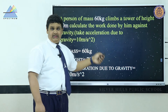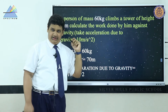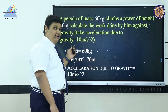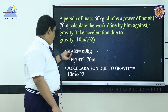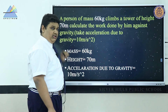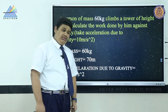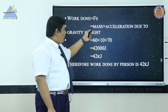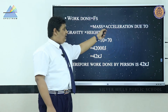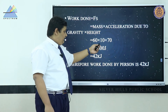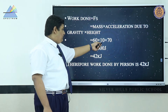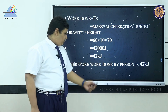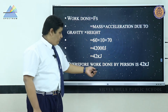Next, a person of mass 60 kg climbs a tower of height 70 meters. Calculate the work done by him against gravity, taking acceleration due to gravity as 10 m/s². We have mass = 60 kg, height = 70 m, and g = 10 m/s². Work done = mass × g × height = 60 × 10 × 70 = 42,000 joule, which is 42 kilojoule.